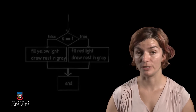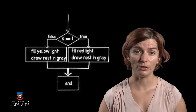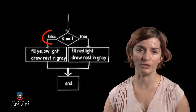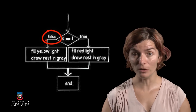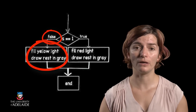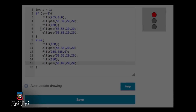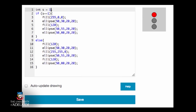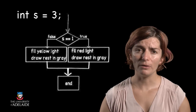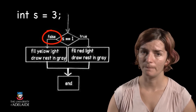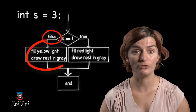Let's try to play with this for a while by giving s various values. Looking at our flowchart, what would happen if the value of s is 2? That's right, the yellow light should be drawn. Let's see if the code compiles. What about if the value of s is 3? That's right, again, the yellow light should be drawn.